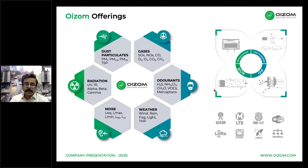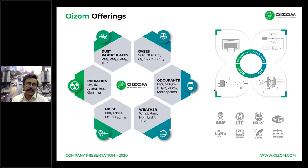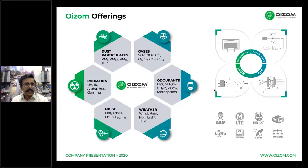Most gas sensors work on the principle of electrochemical sensing, where the sensor reacts to the target gas and generates an electrical output that varies with the amount of gas present. A few gaseous parameters work on the principle of NDIR — non-dispersive infrared — where each gas absorbs infrared at a particular frequency.